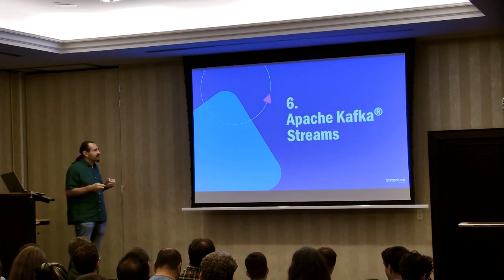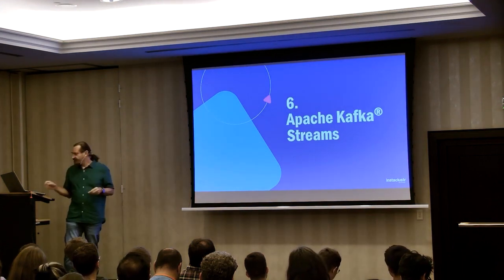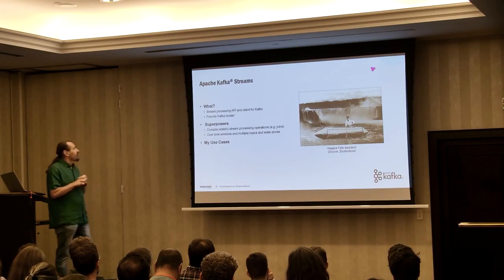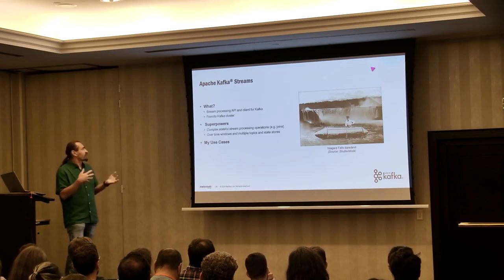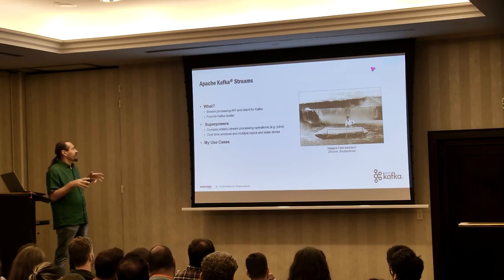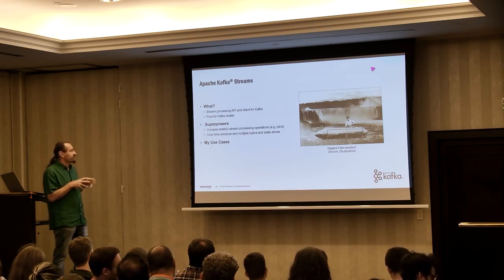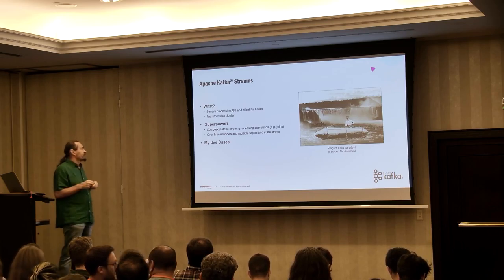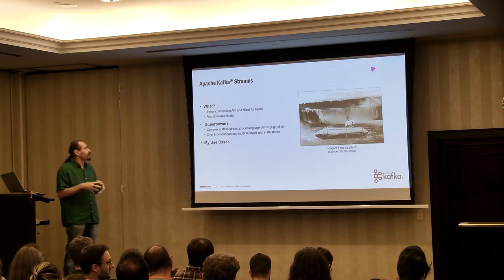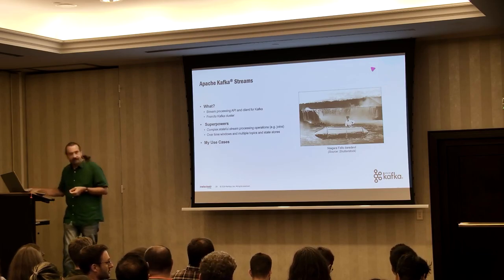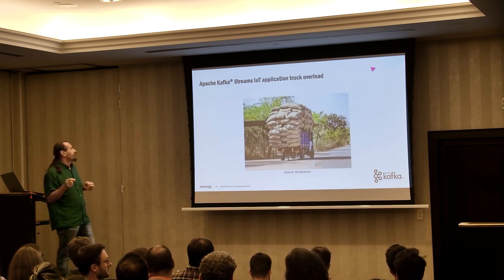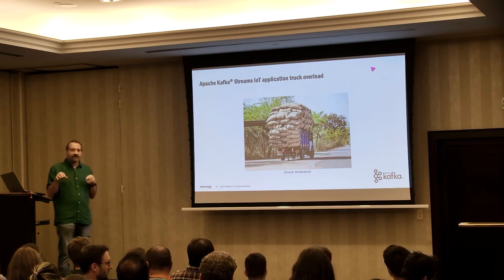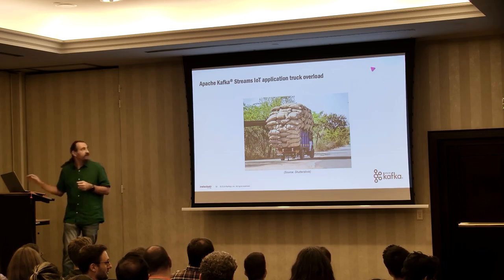Number six: Apache Kafka Streams — a stream processing API and client for Kafka. It works from and to the Kafka cluster. It gives complex stateful stream processing operations, for example joins over multiple streams, multiple topics, different time windows, and state stores. My use case: as part of the IoT application, I included the ability to check where trucks were being overloaded, all done with the stream processing API.